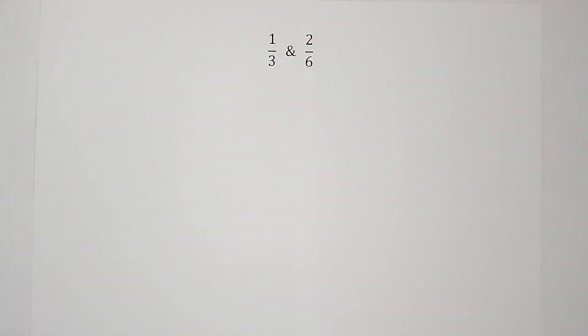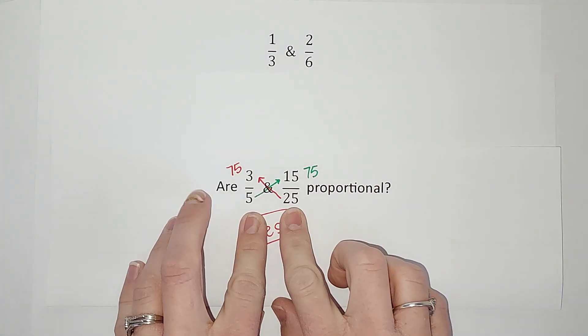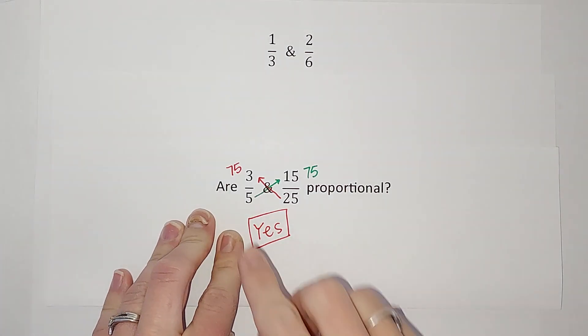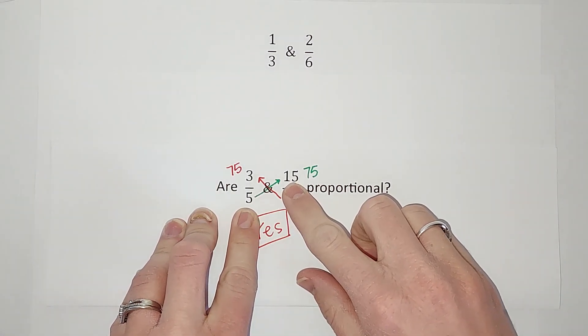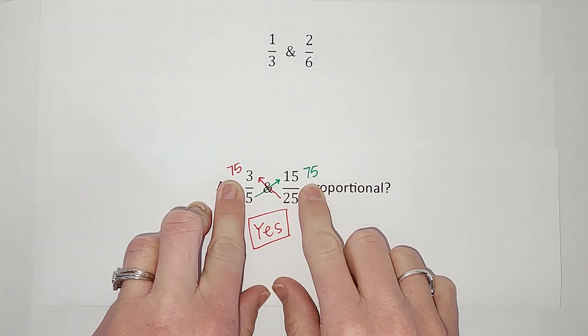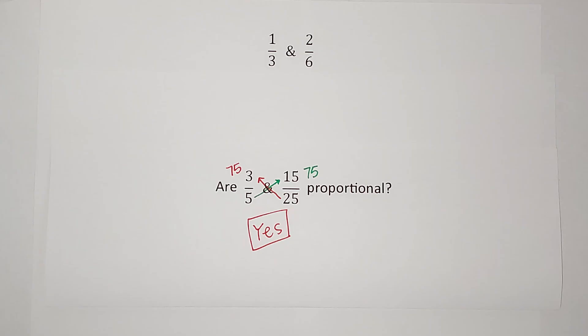Hey, we're going to talk today about why cross products work. They're a handy little trick. What are cross products? That's when you have two fractions and you're trying to determine if they are proportional. You go from the denominator to the other numerator, multiply it, do the same on the other side. If the numbers are the same, it's proportional. If it's not the same, it's not. Really cool trick, but why does that work? Let's take a look.